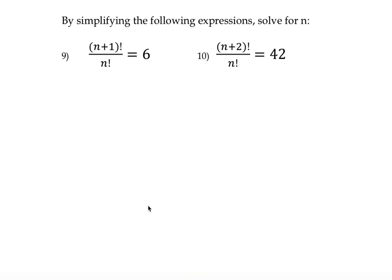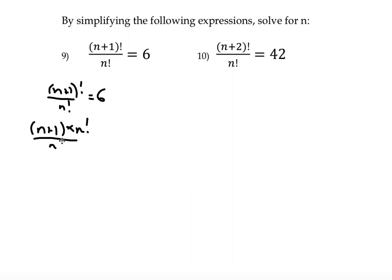Last couple of questions involve equations. On the left-hand side we have factorial expressions we can simplify. Question 9: (N+1) factorial divided by N factorial equals 6. N plus 1 is larger, so we write (N+1) multiplied by N factorial, then divide through by N factorial — giving N plus 1 equals 6. Subtract 1 from both sides: N equals 5.